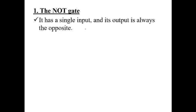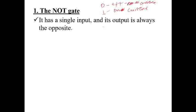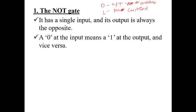Let us see each one by one, starting from the NOT gate. As I said, the NOT gate has one input and one output. The output is always the opposite of the input — if the input is 1 the output is 0, and if the input is 0 the output is 1. Here 0 stands for OFF (no current) and 1 stands for ON (current flowing).